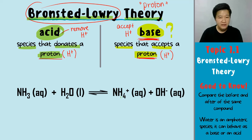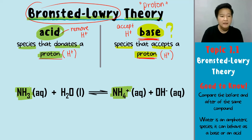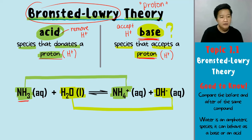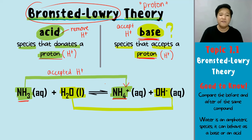Looking at the equation given, first and foremost, let's pair them up — the before and after. Before is your ammonia, NH3; the after is your NH4+. That is my before and after. While your H2O — before is H2O; after is OH−. Then we look at the differences that happen after the reaction. Your NH3 becomes NH4+. In other words, your NH3 actually accepted a H+. Your NH3 accepted the H+ to become NH4+. Therefore, when NH3 accepted the H+, your NH3 will become a base.